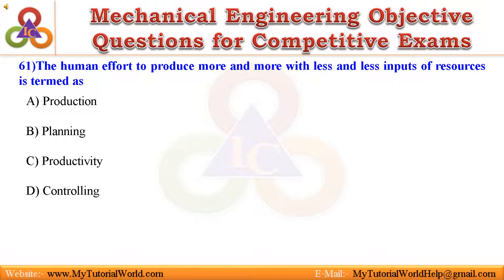61. The human effort to produce more and more with less and less inputs of resources is termed as: A. Production, B. Planning, C. Productivity, D. Controlling. Answer is Productivity.